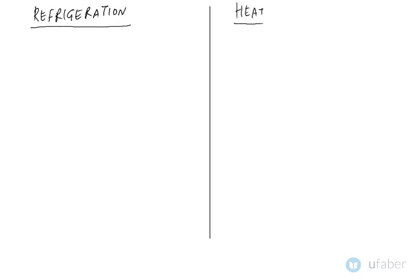Hello and welcome to this first video lecture on the topic of refrigeration and air conditioning. In this first video lecture we would look at some basic topics regarding the subject. Let us start by defining what refrigeration is. Refrigeration is a process of removing heat from a substance under controlled conditions. We will look at those controlled conditions in the subsequent video lectures.